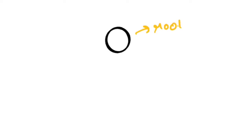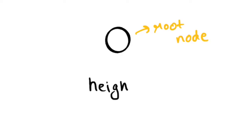In case there is only one node, which is the root node itself, the height will be 0.